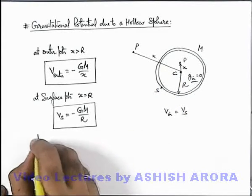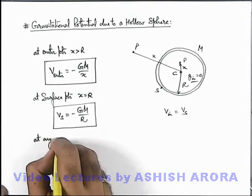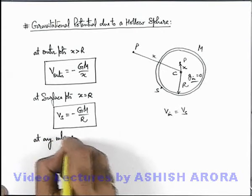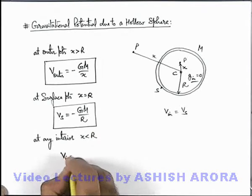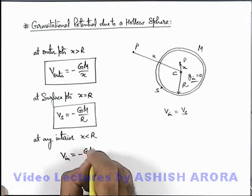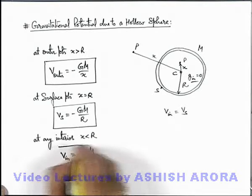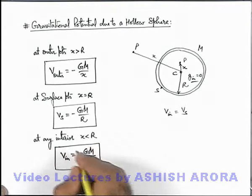So we can simply write at any interior point, for x less than R, V inside is always equal to minus GM/R, that is a potential which is equal to that at the surface.